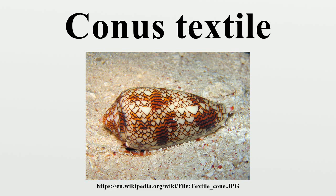Ecology - Life Cycle: The female lays several hundred eggs at a time, which hatch after about 16 or 17 days. After hatching, the larvae float around in the current for approximately 16 days. Afterward, they settle at the bottom of the ocean. By this point their length is about 1.5 mm.